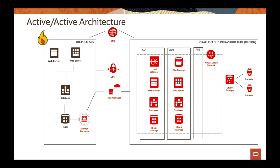In an active-active architecture, both environments are up and running at the same time with data synchronized between them. Most customers use FastConnect, which connects on-premises to OCI over a private line at up to 10 gigabits per second for fast, regular data transfer. You have load balancers, web servers, and databases all placed in OCI as well, synchronizing data from on-premises. If there's a problem on-premises, the DNS traffic manager switches traffic over and everything is up and running, with very short RTO and RPO.